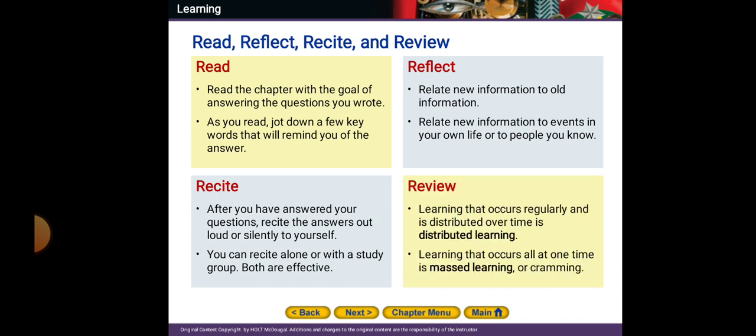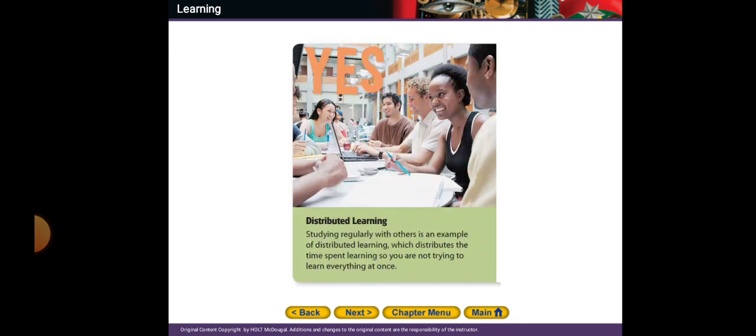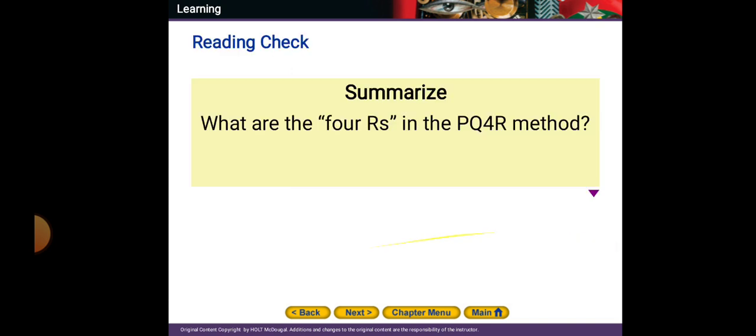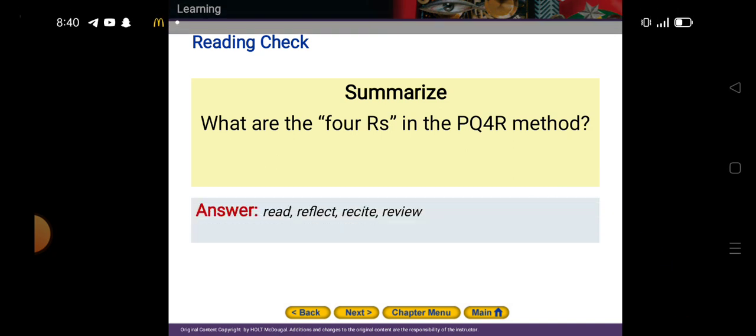Review: learning that occurs regularly and is distributed over time is called distributed learning. Learning that occurs all at one time is massed learning or cramming. Distributed learning is better — studying regularly with others is an example of distributed learning, which distributes the time spent learning so you are not trying to learn everything at once. Cramming for a test is not an effective way to study — studies show that massed learning or cramming is rarely successful. The four R's in PQ4R are: Read, Reflect, Recite, and Review.